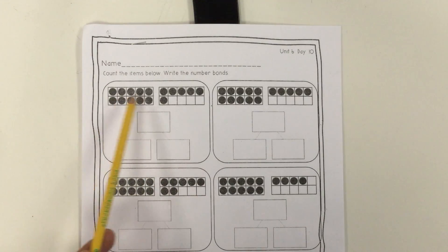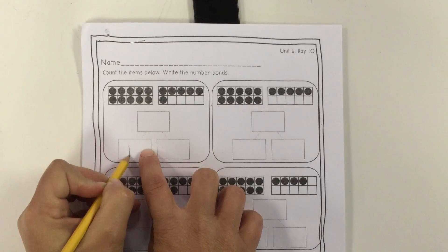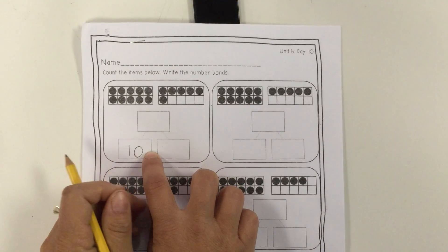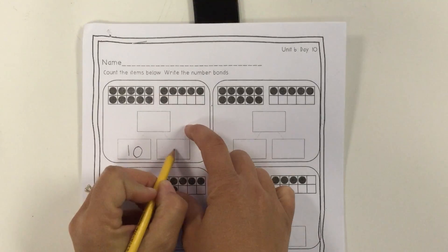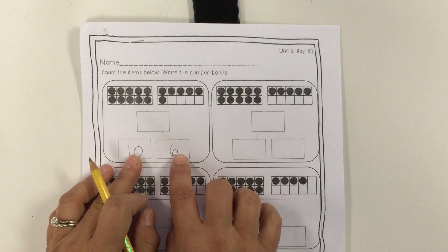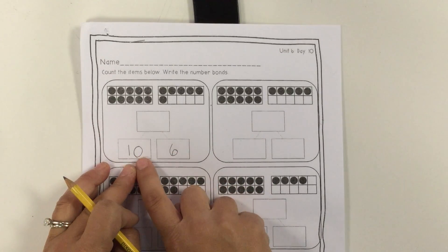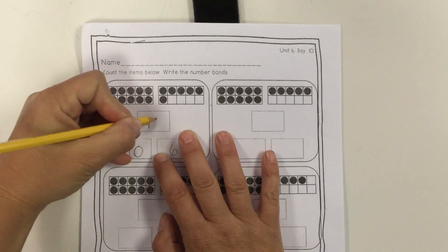So this is just like our disappearing zero game where you're going to take the 10 and carry it down here. That's one part and then 6, and then you're going to say 10 and 6 make. And so you're going to imagine taking that 6 and covering up that 10 and it makes 16.